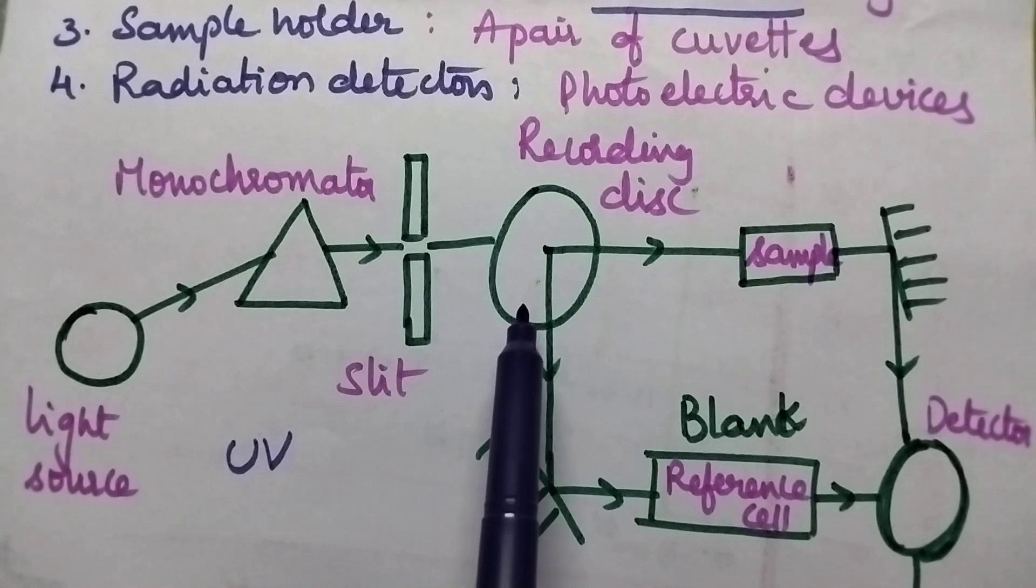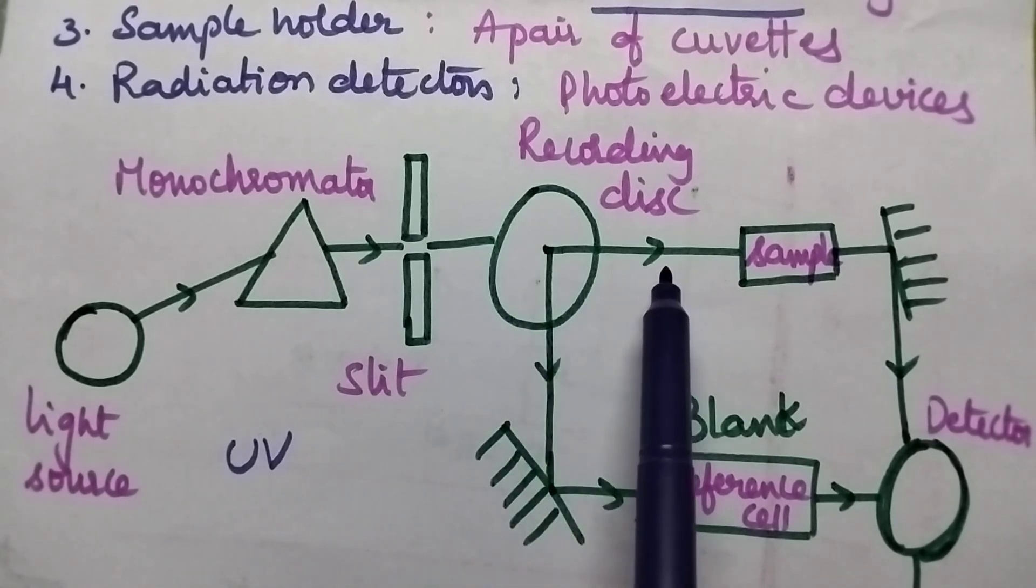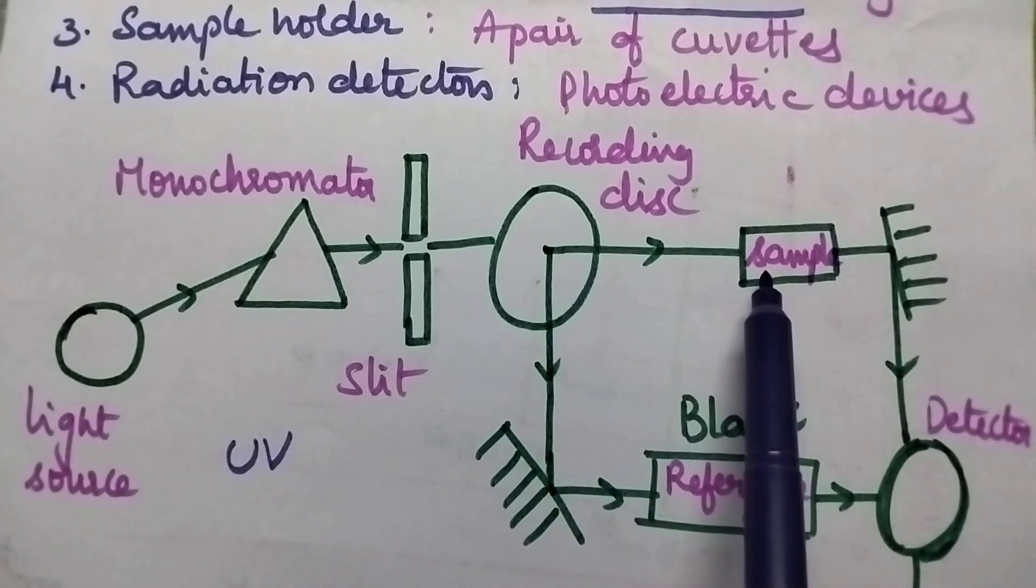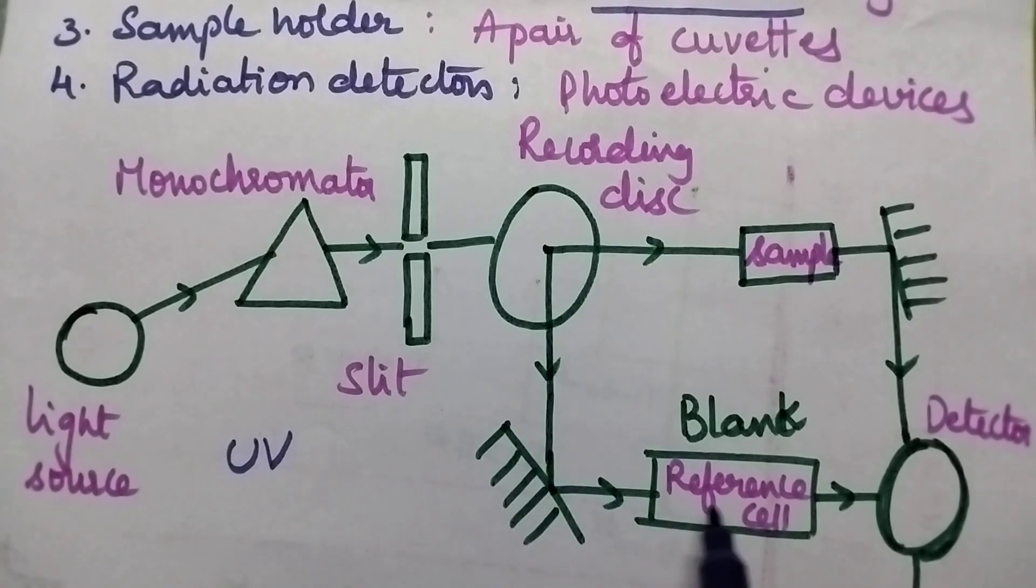This recording disc is capable of dividing the light radiation into two equal halves of the same intensity. One light radiation is passed through the sample and the other is passed through the reference cell. Reference cell consists of blank solution. Here, the absorption of the blank solution is nil in the UV region.